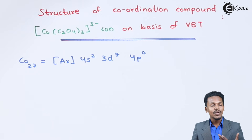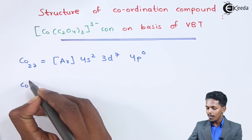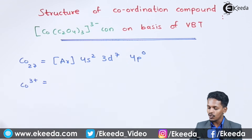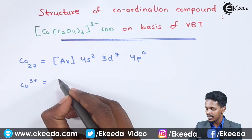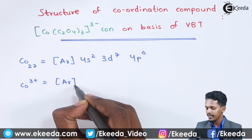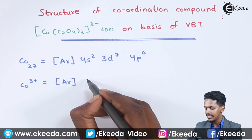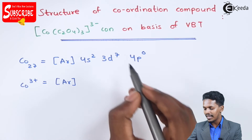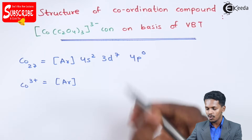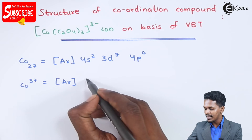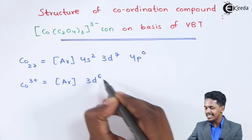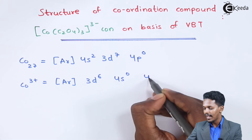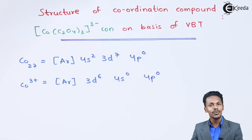So the Co³⁺ ion will have the electronic configuration [Ar]18, because 2 electrons will be lost from the 4s orbital and one electron will be lost from the 3d orbital, making it 3d6, 4s0, 4p0.